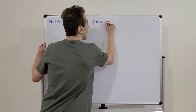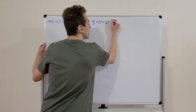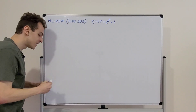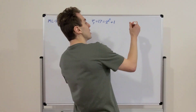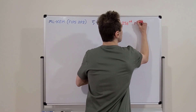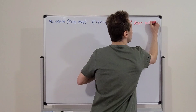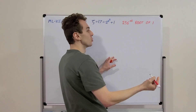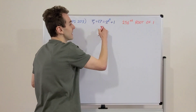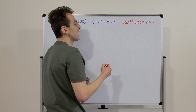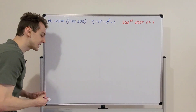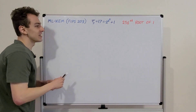We can write 17 as 2 to the power of 2 to the power of 2 plus 1. 17 is described as a 256th root of unity mod q, where q is the modulus. So we're describing this integer, 17, as a 256th root of unity mod q. What does this actually mean? Let's investigate this further.